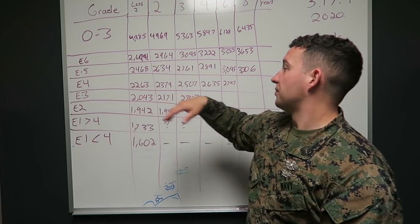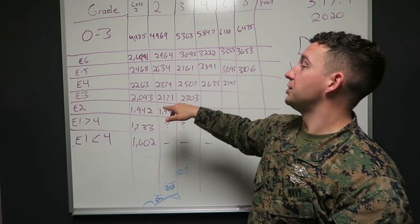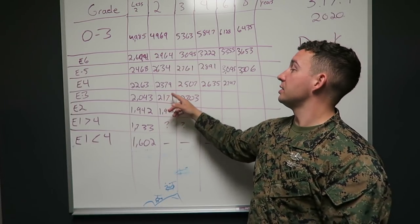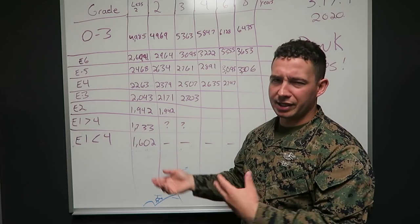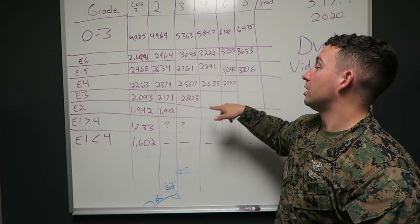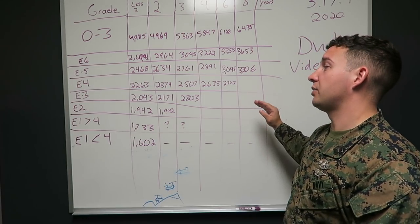So E3, which is probably going to affect the majority of you. Less than two years, $2,043. More than two years, $2,171. So you get a nice increase of about $130. Over three years, $2,303. Once you hit your four-year mark, you're going to stalemate at E3.